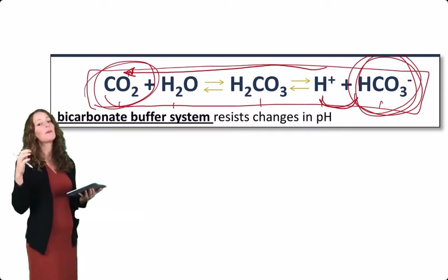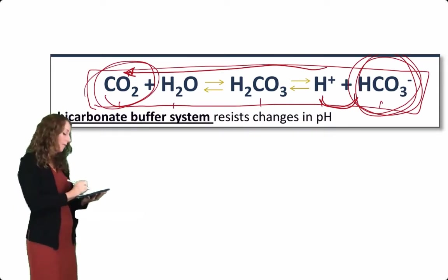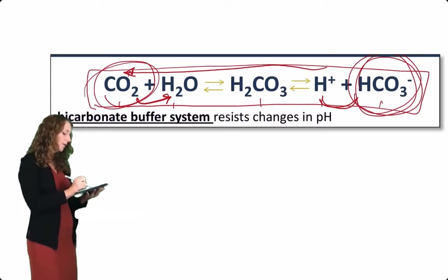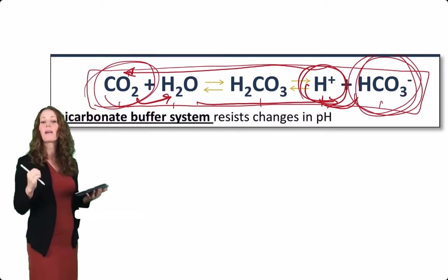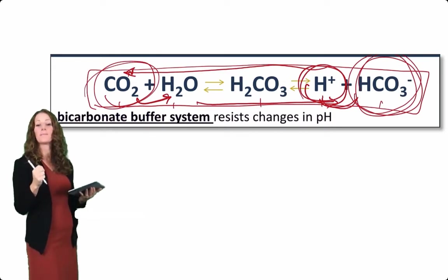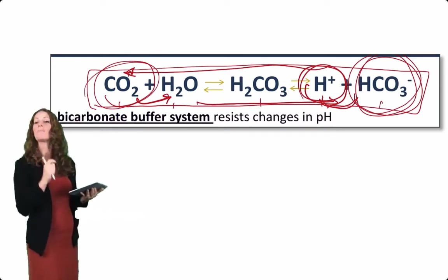Conversely, if carbon dioxide levels are high in the blood, that will combine with water to dissociate ultimately and liberate acid. So an increase in carbon dioxide in the body essentially is an increase in acid in the body. So take a look at this reaction and think about it in both directions.